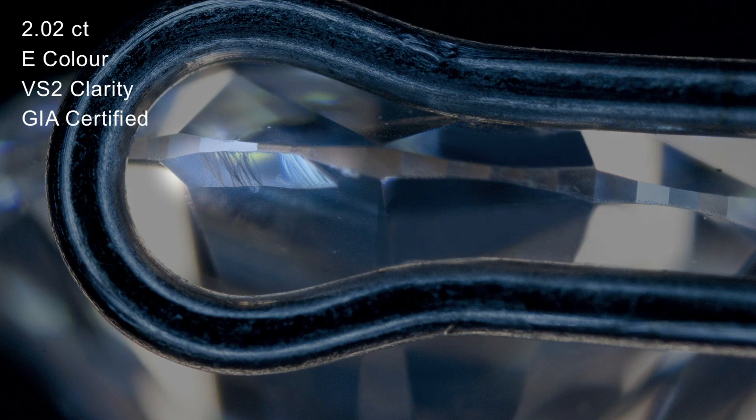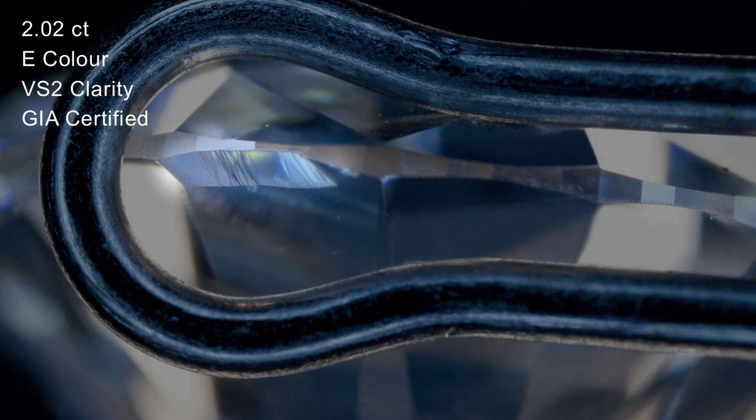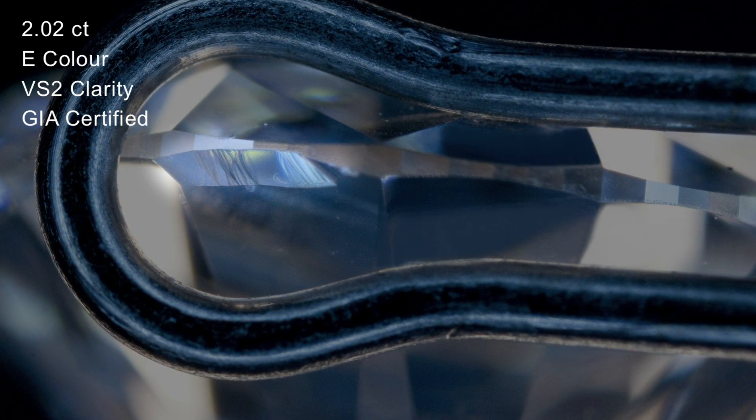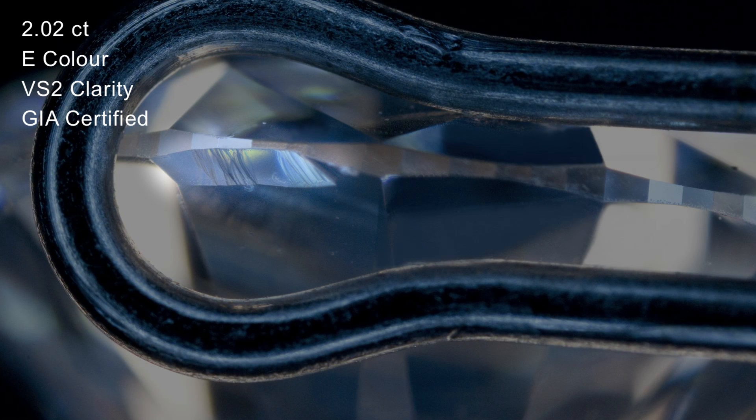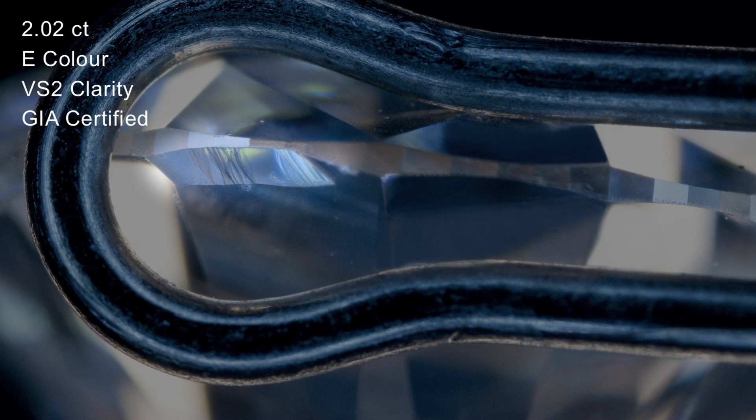What's interesting is you could have an internally flawless diamond, but it still had a natural marked on the inclusion map. Naturals are pretty much always on the girdle of the diamond.